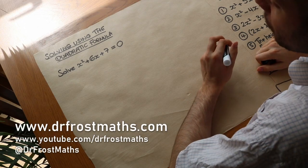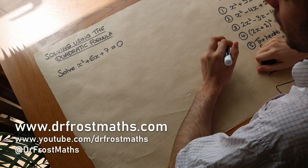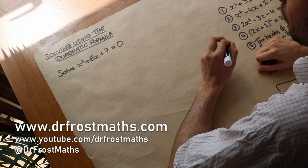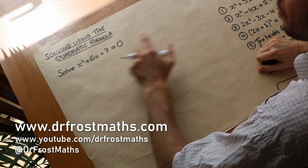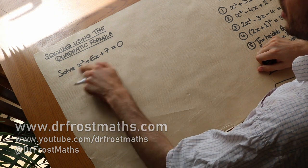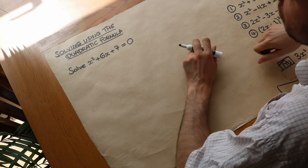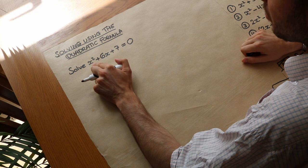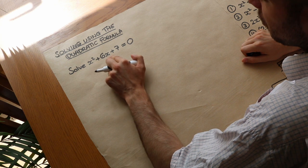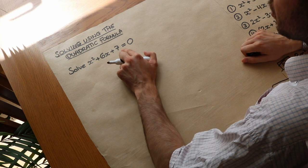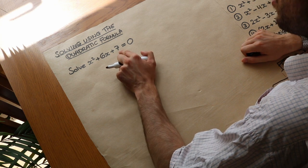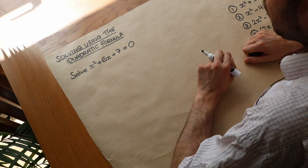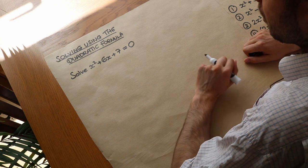Hello and welcome to this video on solving quadratic equations using the quadratic formula. A quadratic equation is when you have an x squared term, possibly an x term, and possibly a constant term as well, where a constant term doesn't have an x or any variables in it.